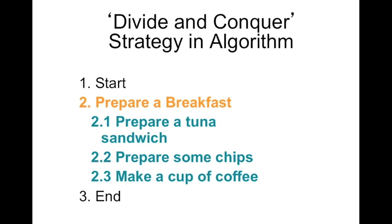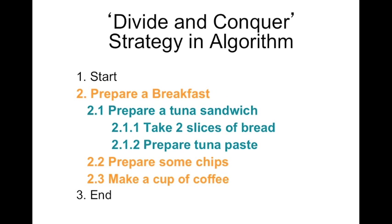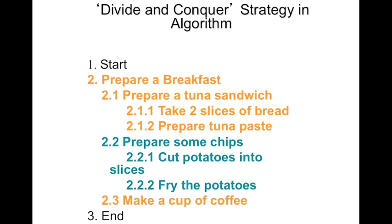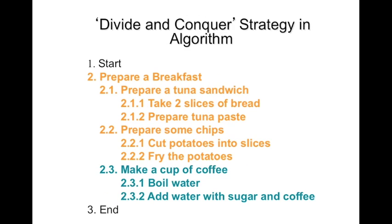To prepare a tuna sandwich or to prepare some chips also require further sub-steps or smaller steps. Now to prepare a tuna sandwich, the sub-steps of this main task is to take two slices of bread and the second step is to prepare the tuna paste. For the second step, to prepare the chips, we need to cut the potatoes into slices as the first sub-step of this prepare some chips step, and then to fry them. And finally, to make the cup of coffee, we need to boil water and add water with sugar and coffee.